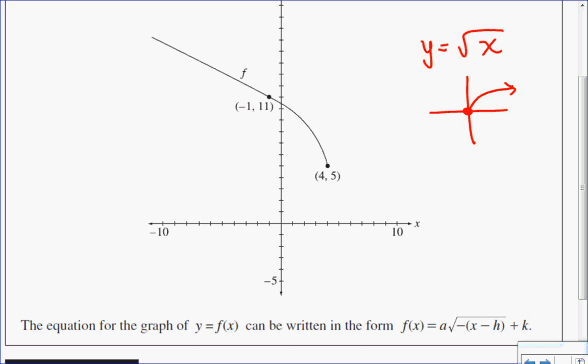So I can see a couple of things have already happened. The first thing is it's not opening up and to the right, it's opening up and to the left. So I know that there has been a horizontal reflection, which means that my b value at the very minimum will be a negative 1.